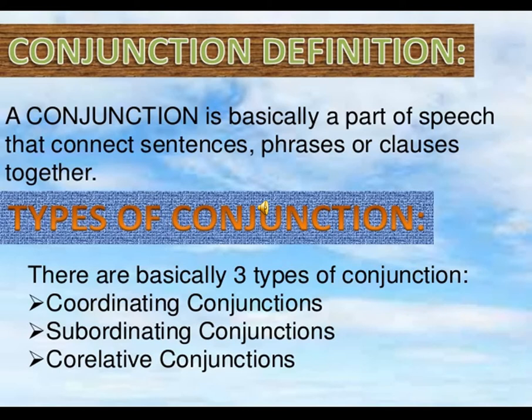There are three types of conjunctions we're going to discuss in today's video. The first one is coordinating conjunctions, the second is subordinating conjunctions, and the third are correlative conjunctions.